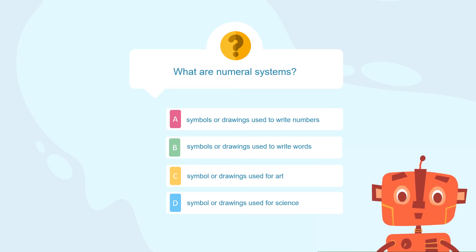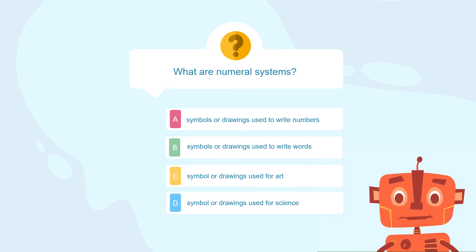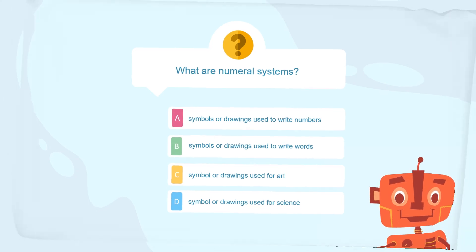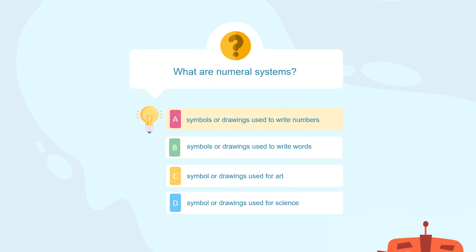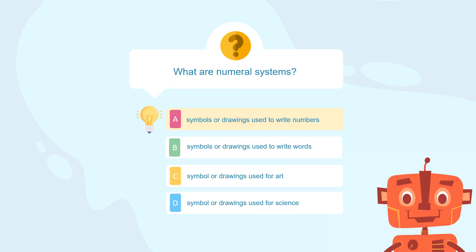What are numeral systems? Is it A, symbols or drawings used to write numbers? Is it B, systems or drawings used to write words? Is it C, symbols or drawings used for art? Or D, symbols or drawings used for science? If you answered A — symbols or drawings used to write numbers — you are correct. Good job!